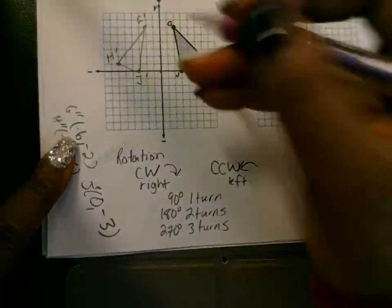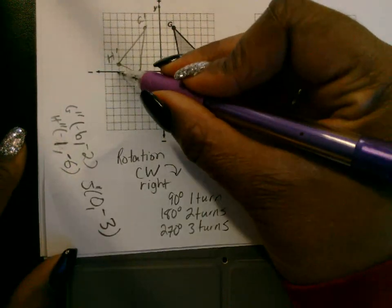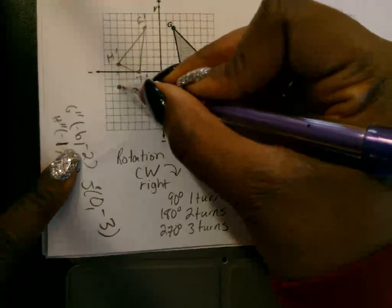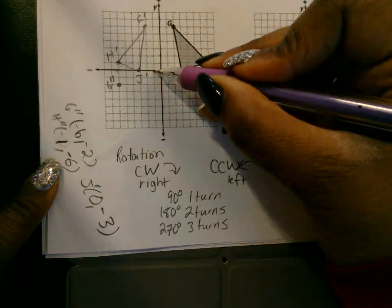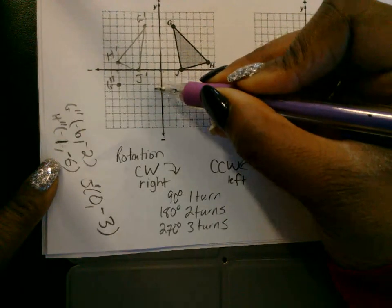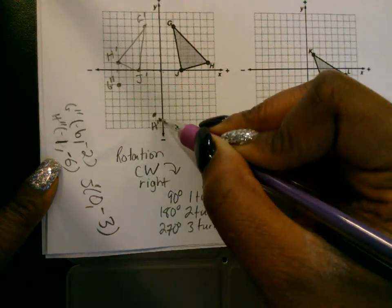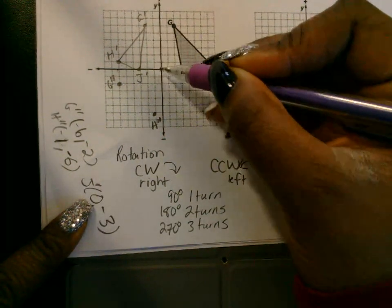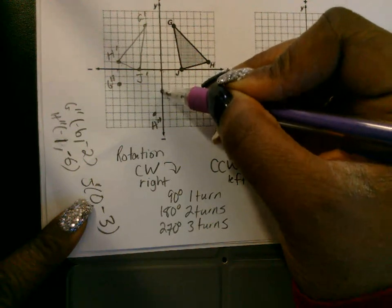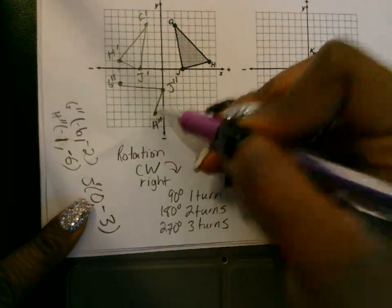All right, let's graph these ordered pairs. Graph G at negative six, down two — this is G prime prime. H at negative one, down six — this is H prime prime, the second time H has moved. Then zero, negative three — down one, two, three — this is J prime prime, the second time J has moved. This is the second transformation.